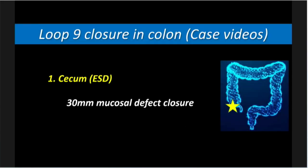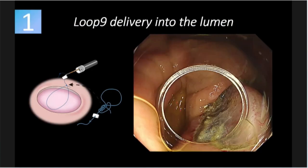First, I'd like to share our case. This is a case of the colon — in the cecum, we have already completed ESD. After that, we will close this defect using a clip and loop nine, what we call the pushing sliding notch technique. Let's see the procedure. Now we deliver the loop nine to the site.